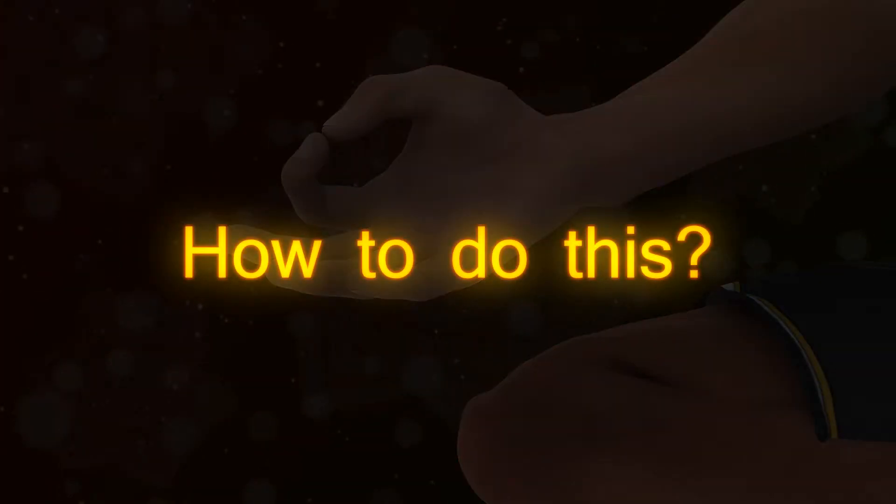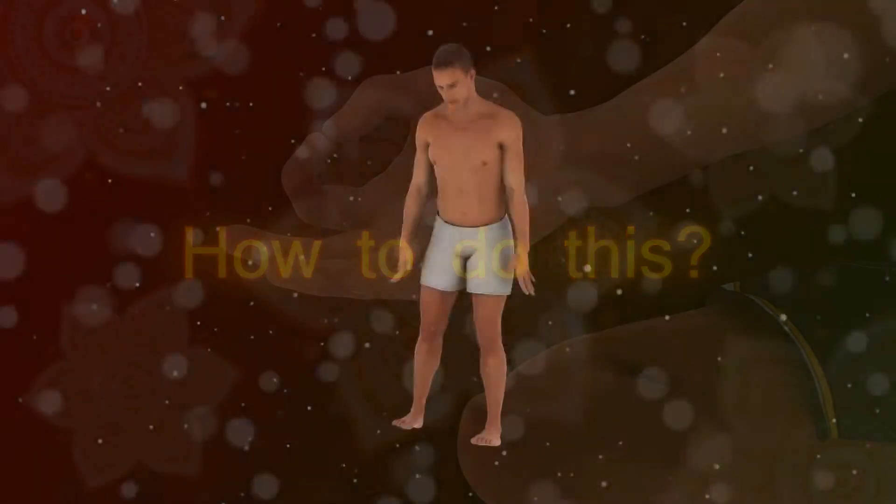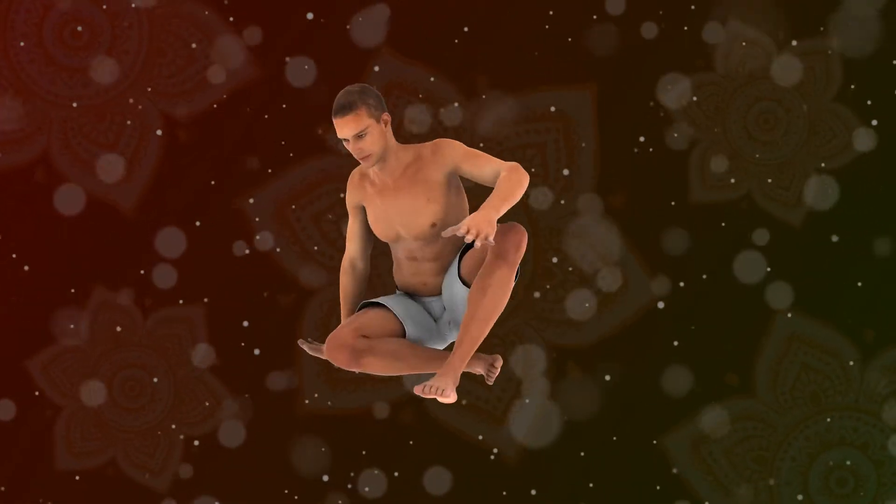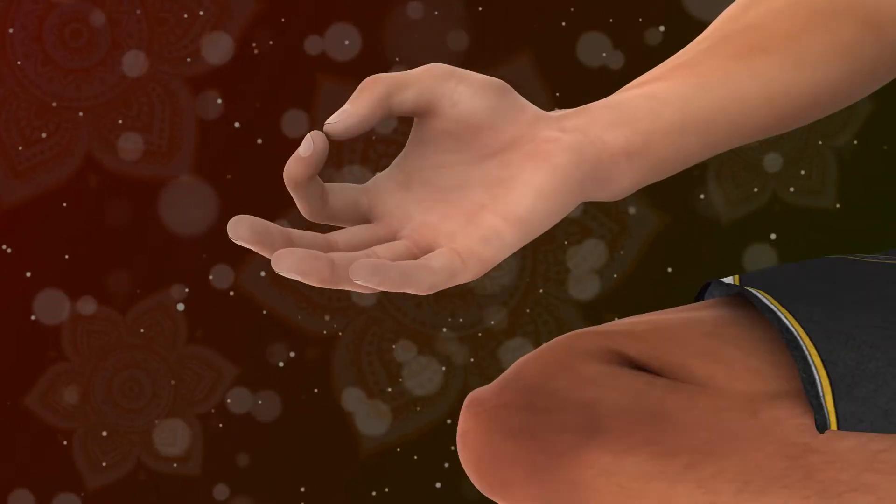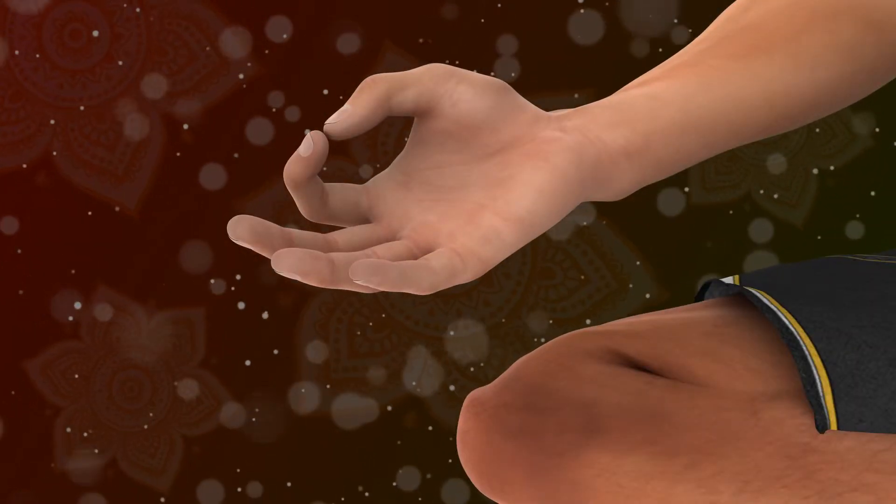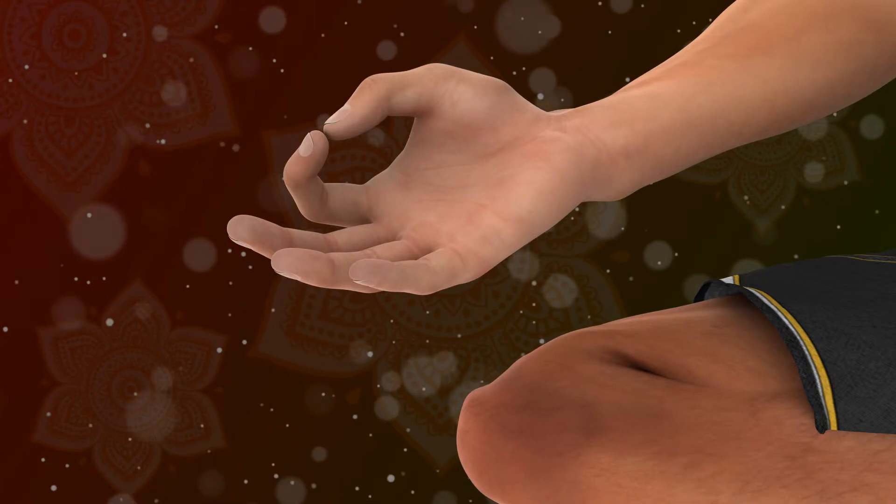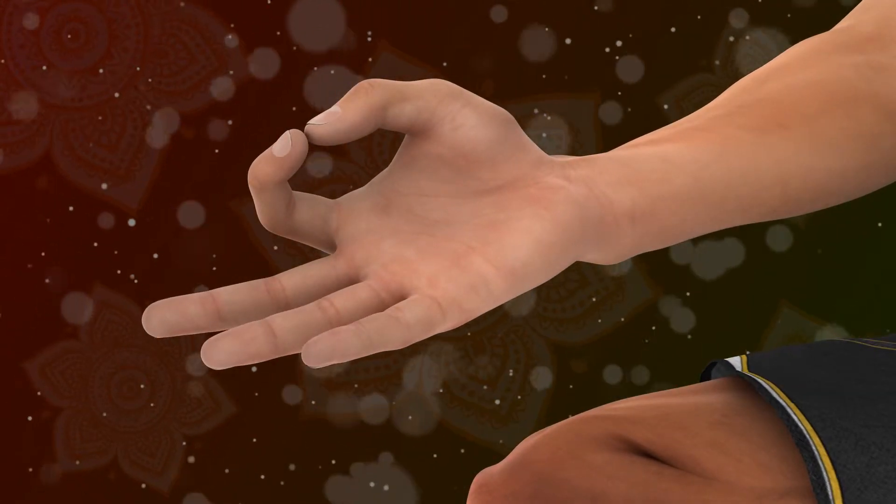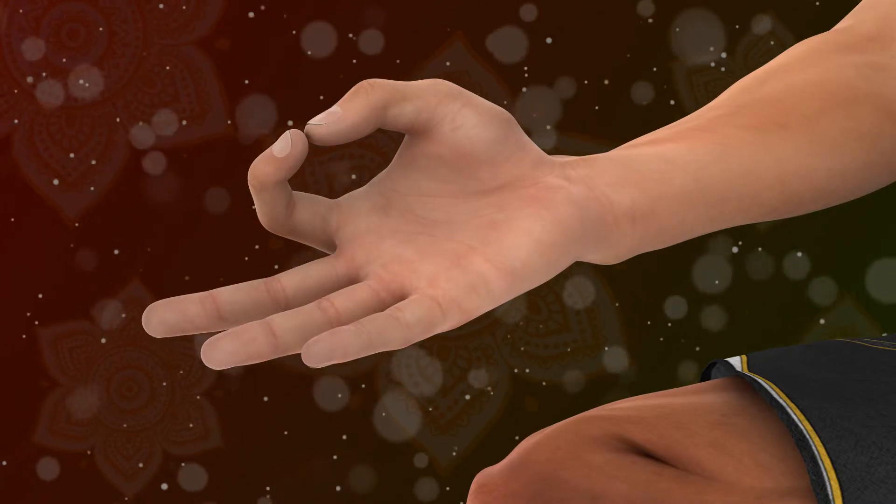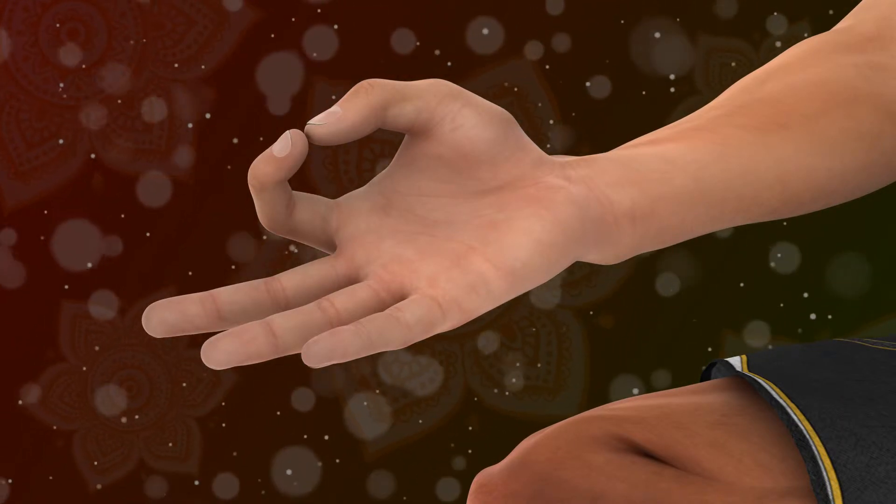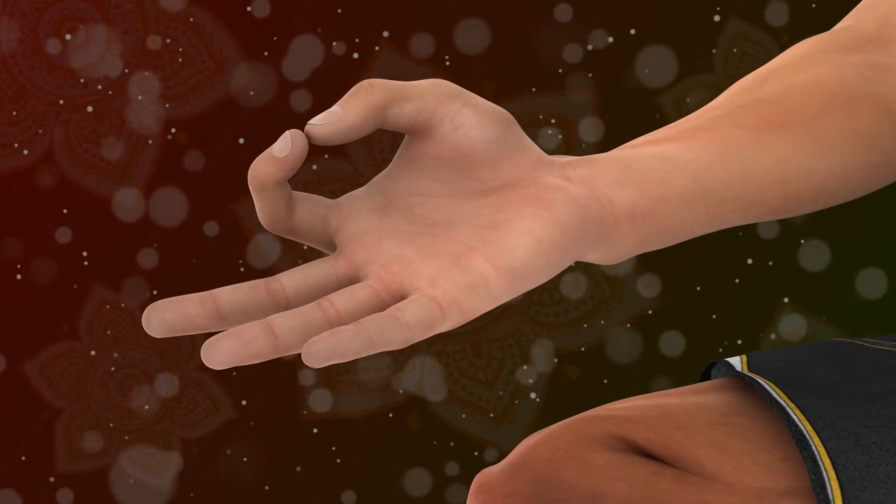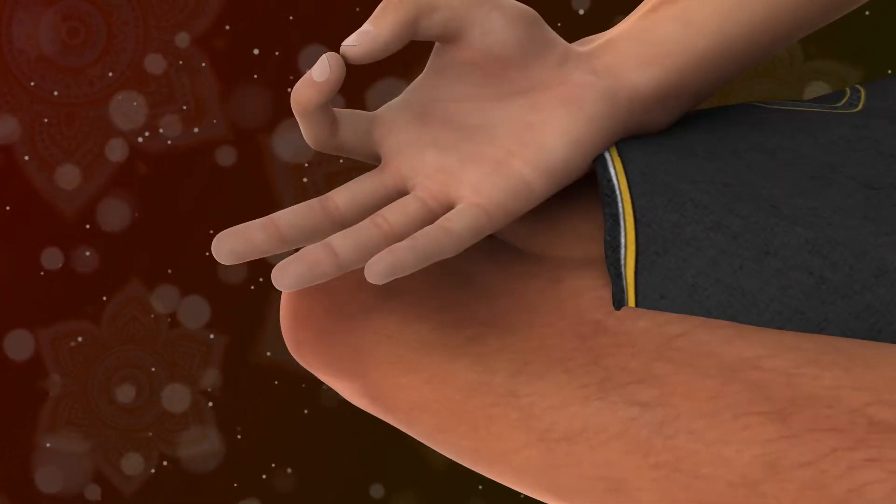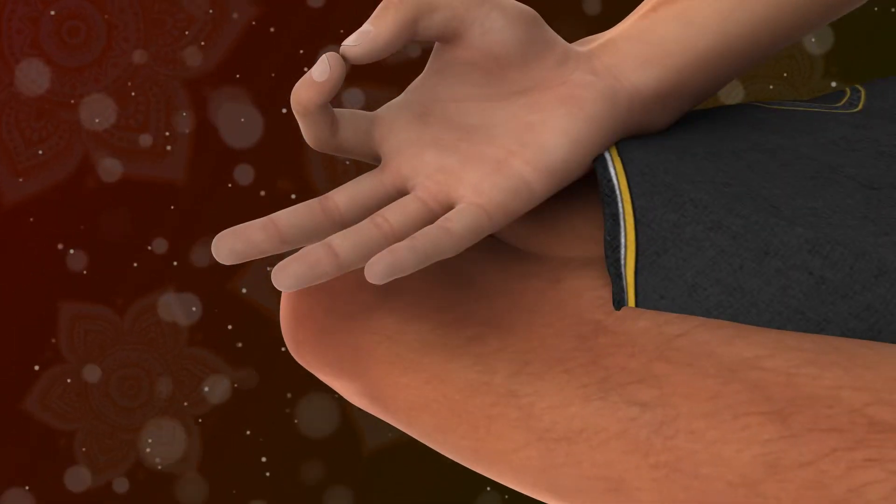Now, how to do this? For that, assume a comfortable meditative position. Join the tip of the index finger and the thumb. Straighten the other three fingers of both hands so that they are relaxed and slightly apart. Place the hands on the knees with the palms facing up.